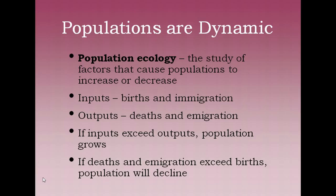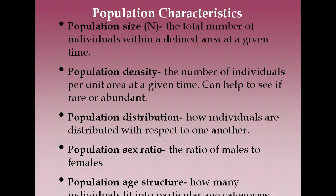There are numerous circumstances where scientists would want to know the factors that influence population size. For example, with any endangered species, you want to know the factors that affect its size so you can implement measures to improve its survival and reproduction. It could also be useful to know the population size of a pest species so you can develop strategies to eradicate that pest. To know how a population will change over time, you first need to know basic population characteristics: population size, density, distribution, sex ratio, and age structure.